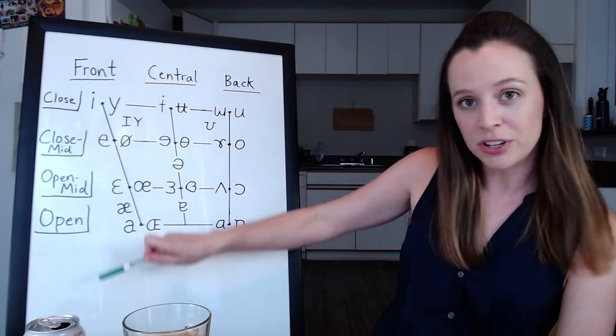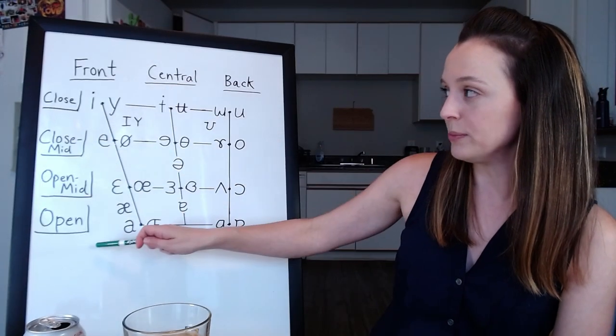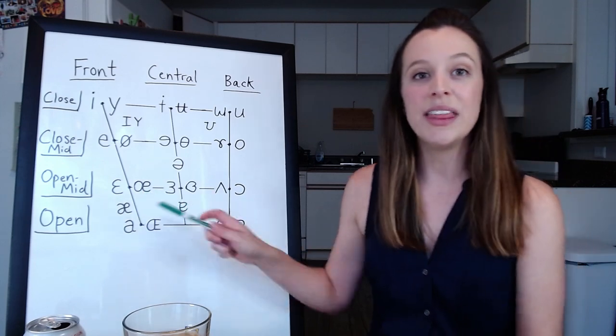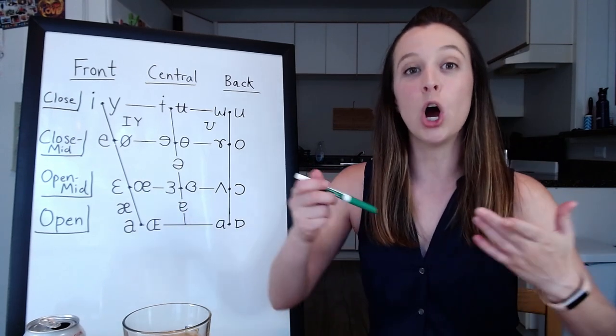So this is just a chart of where your tongue is when you're saying which vowels. As we work on the vertical axis, we have close to open, also called high to low.